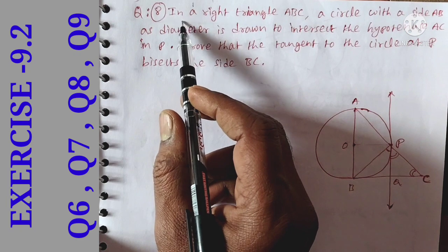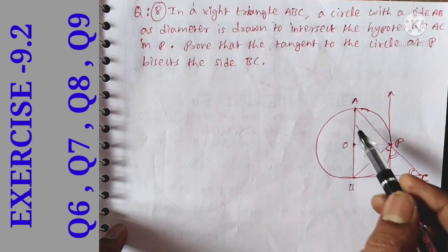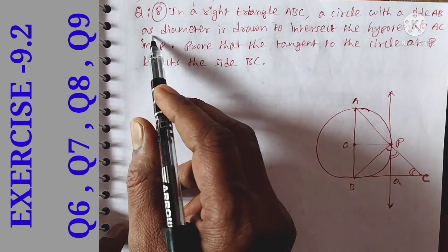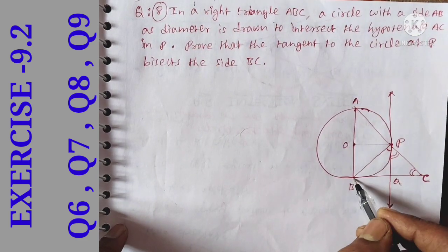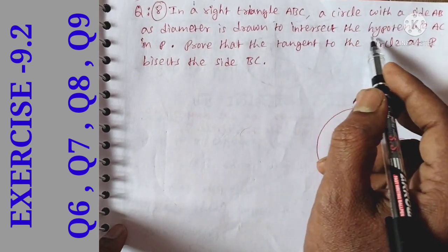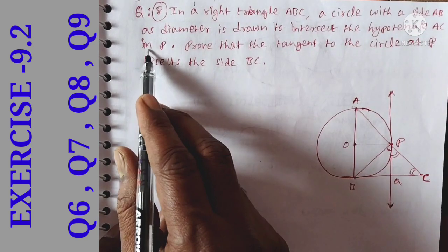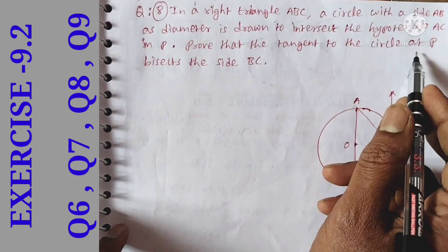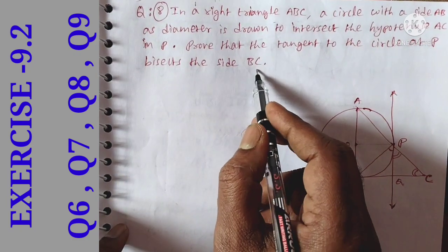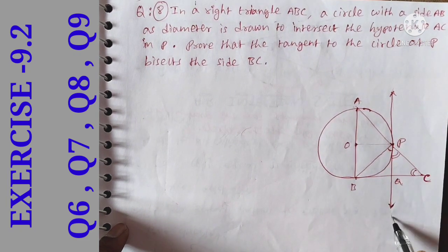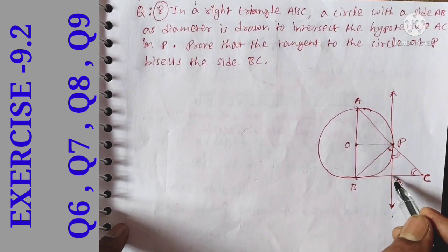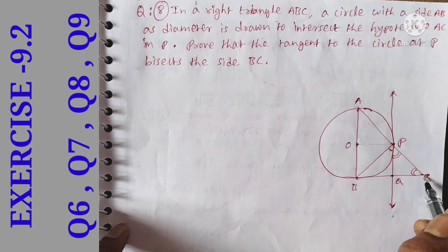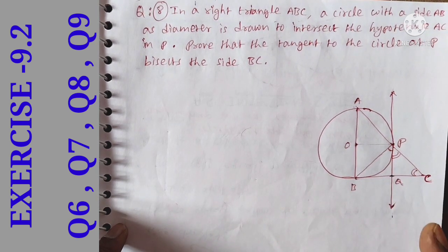Question number 8. In a right angle triangle ABC, a circle with side AB as diameter is drawn to intersect the hypotenuse AC at P, such that the tangent to the circle at P bisects the side BC. BQ is equal to QC — we will prove this.